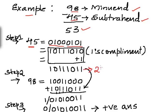That gives us the two's complement of 45, which is 10111011. This completes step 1. In step 2, we add the minuend — 98 — to the two's complement result, 10111011. 98 can be written in binary: 9 as 1001 and 8 as 1000.